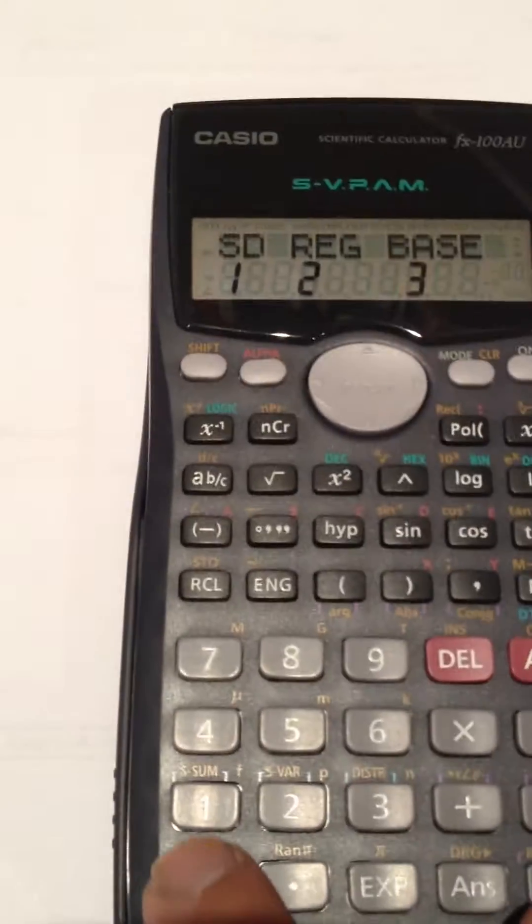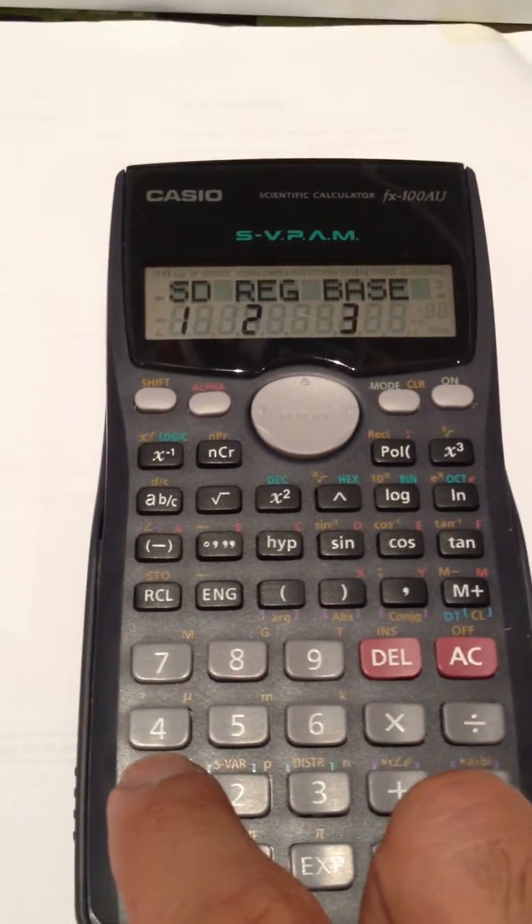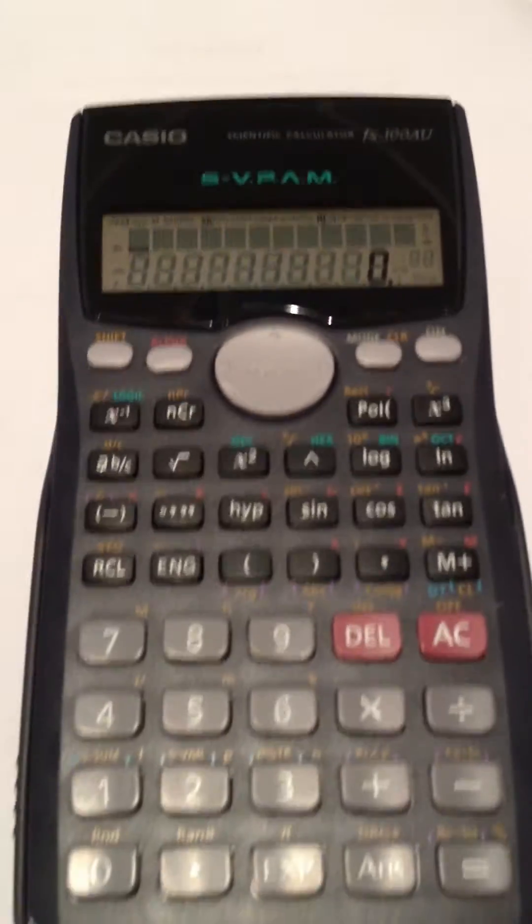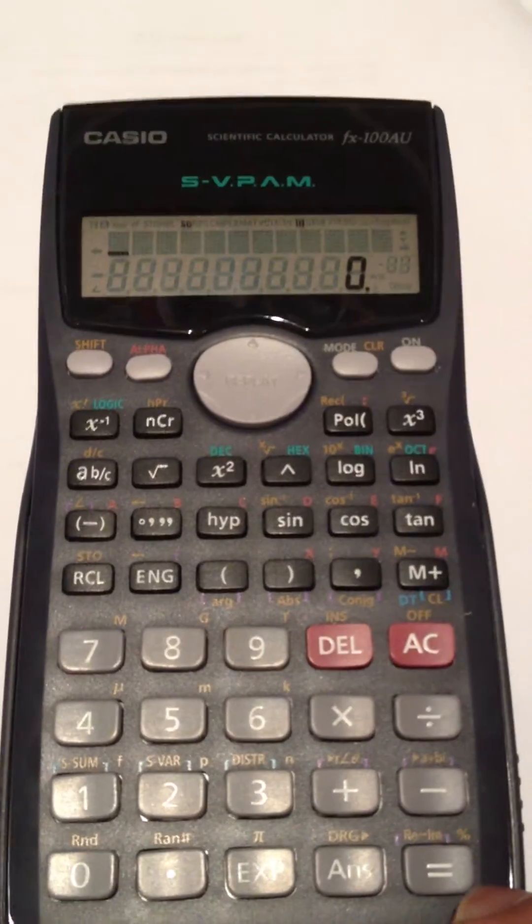You just press one. When you press key number one, it goes into SD statistics mode, and you can see SD displayed right there. Now you can punch in the keys and do what you need to do.